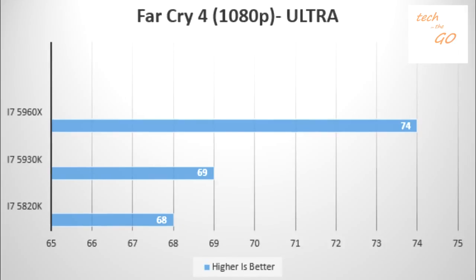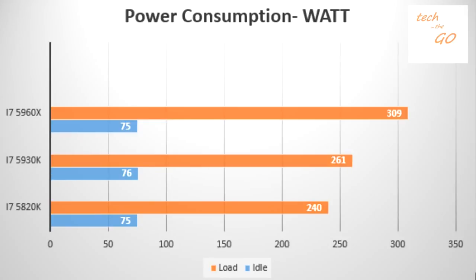On Far Cry 4 at 1080p resolution on ultra settings, the i7-5960X runs at 74 frames per second, the i7-5930K at 69 frames per second, and the i7-5820K at 68 frames per second. Now let's look at power consumption in watts.